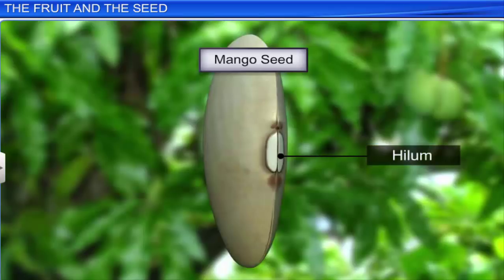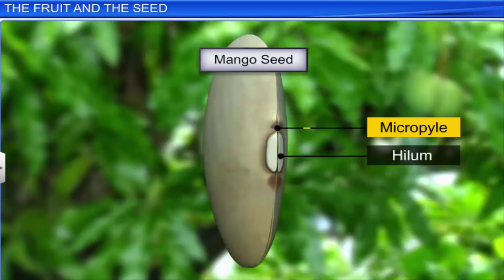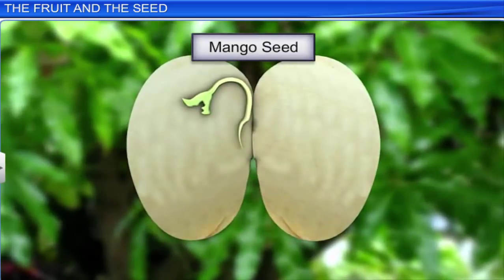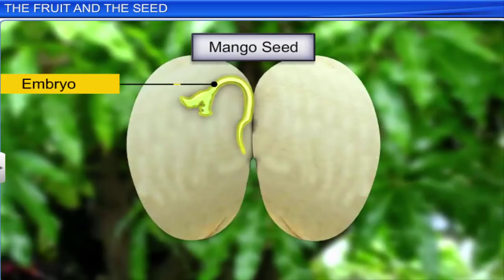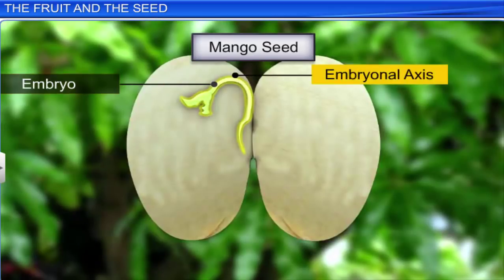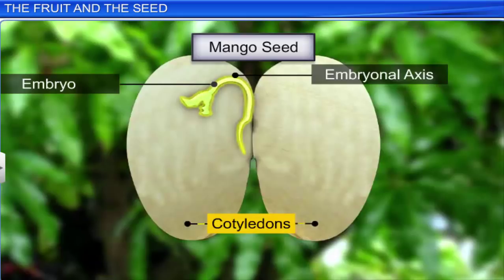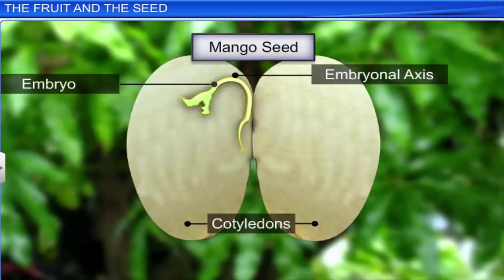Above the hilum is the micropyle, a small pore in the outer coat of the seed. It is through the micropyle that the pollen tube enters an ovule. Inside the seed coat lies the embryo, which comprises an embryonal axis and two cotyledons. At the two ends of the embryonal axis lie the plumule and the radicle.